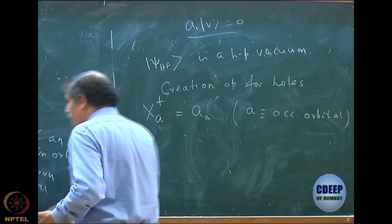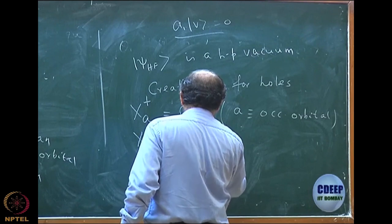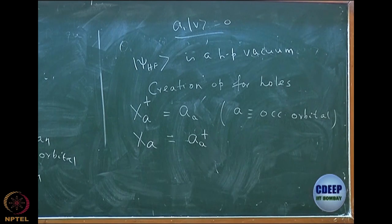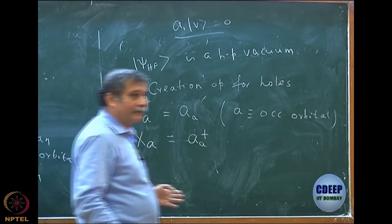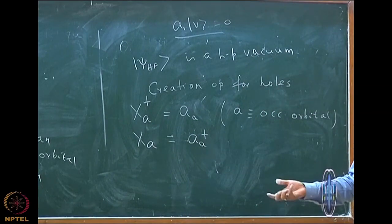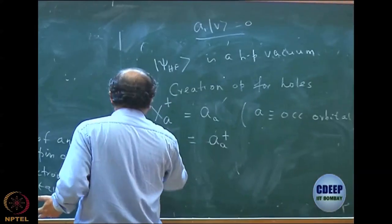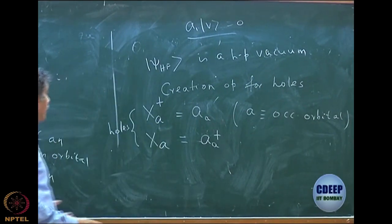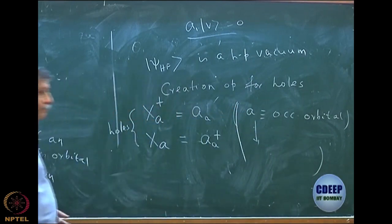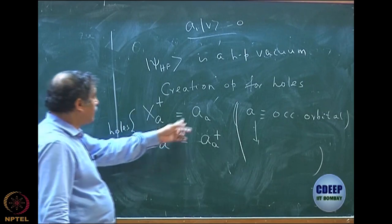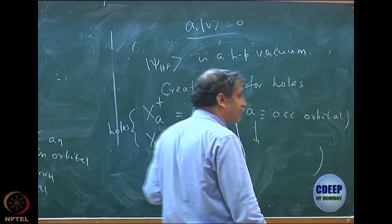Let me define this creation operator as x to distinguish from small a. 'a' was the electron creation operator; x is the hole-particle creation operator. I define the creation operator x_a dagger as equal to a_a when a is an occupied orbital, because holes are always in the occupied orbital. This becomes my hole creation operator. Hole creation operator essentially means I annihilate an electron in the Hartree-Fock. So whenever a_a acts on Hartree-Fock, it will generate a hole. The adjoint is defined such that the annihilation of a hole is the creation of an electron in the occupied orbital.